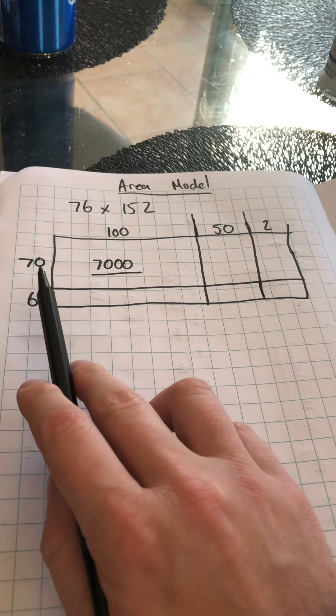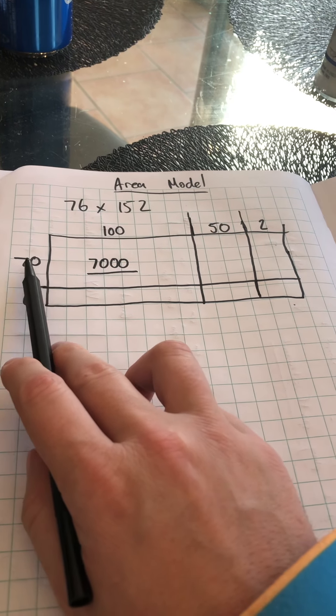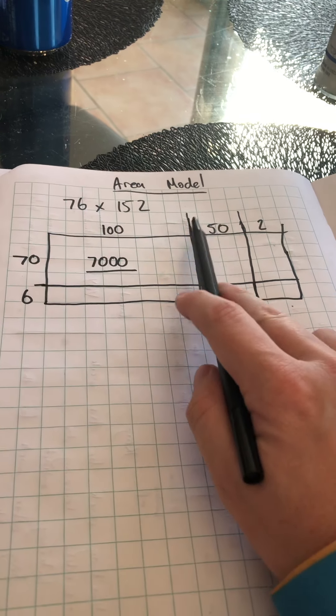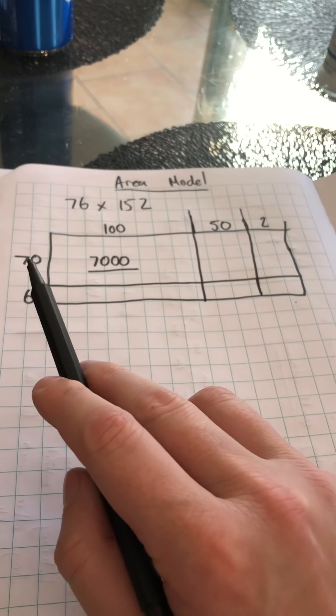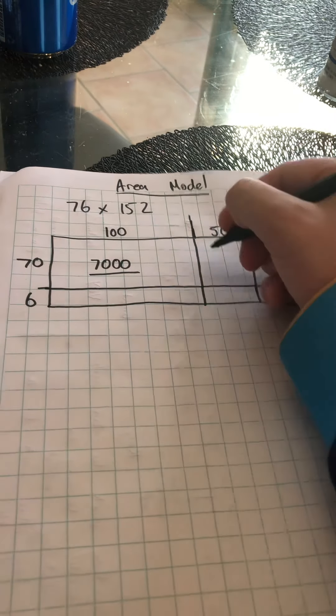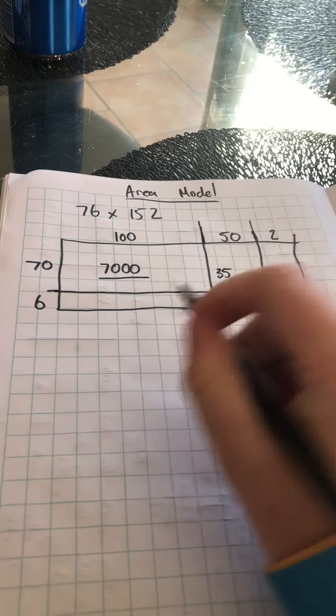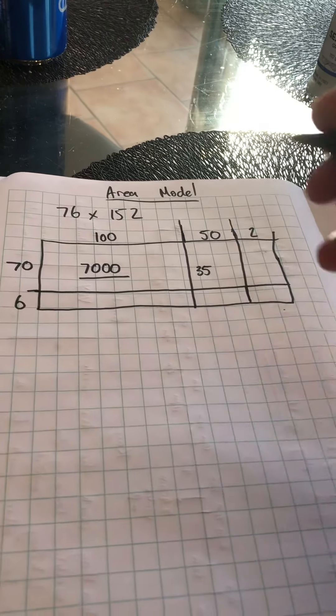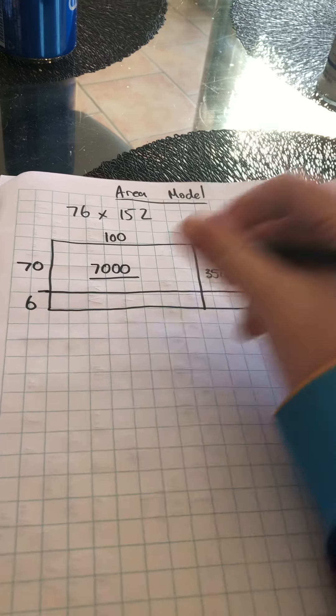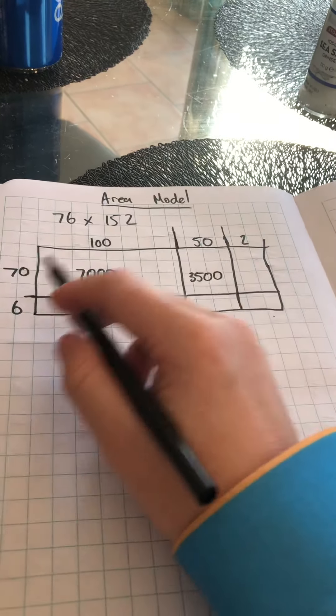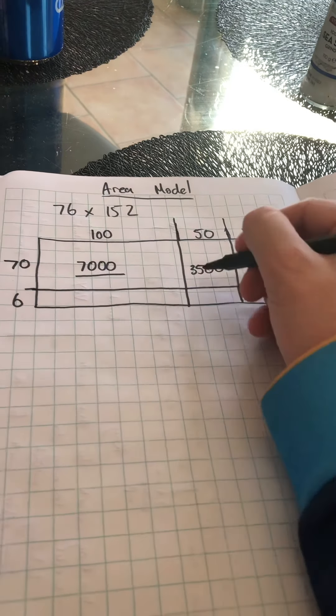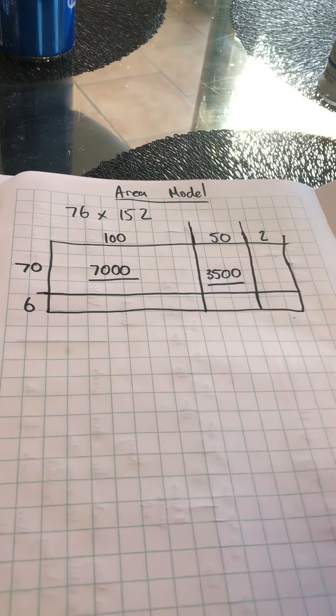I'm now going to go across and continue to work on the 70. I'm going to go 70 multiply by the 50. I know that 7 times 5 is 35, and I can see that I've got two zeros, so I'm going to add those two zeros to the end. That's going to be 3,500 worth in that box there.